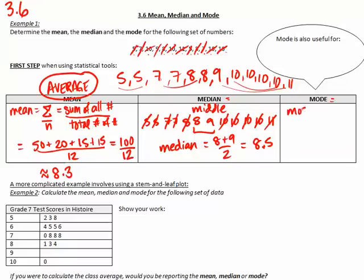Mode stands for the most often or most common number. A little trick: MODE is the only one that starts with MO, which relates to the word 'most' or 'most often.' The number that occurs most often in this set is 10. If you had an equal number of the most frequent values, you could have two modes or three modes. If there are no common numbers, there's no mode — for example, if you had two of every number, there would be no mode.